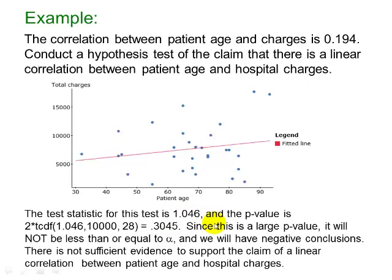The test statistic for this test turns out to be 1.046. The p-value is 2 times tcdf of 1.046 up to 10,000 with 28 degrees of freedom, giving us 0.3045. Since this is a large p-value, it will not be less than or equal to alpha, so we have a negative conclusion. Our final conclusion is that there is not sufficient evidence to support the claim of a linear correlation between patient age and hospital charges.